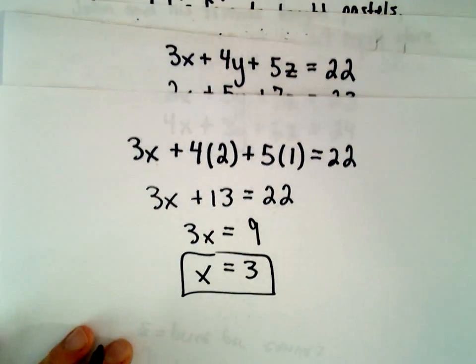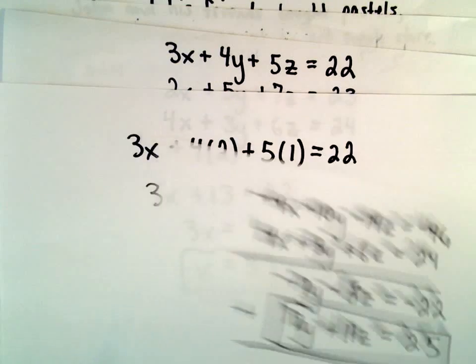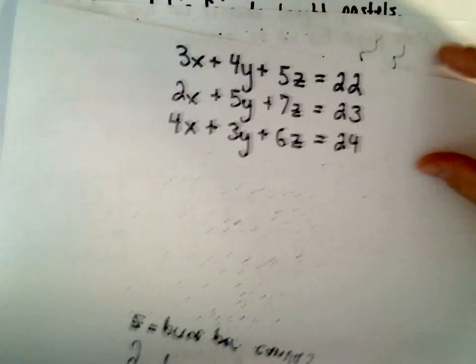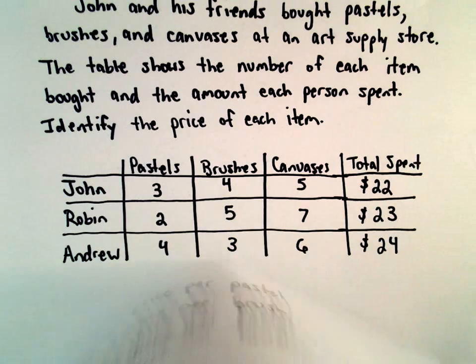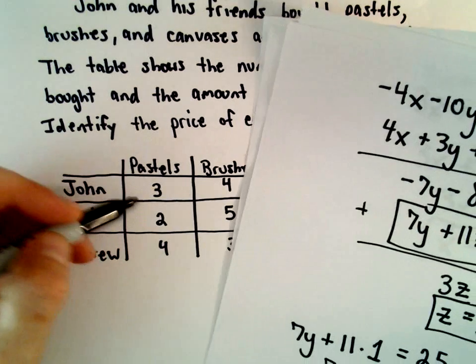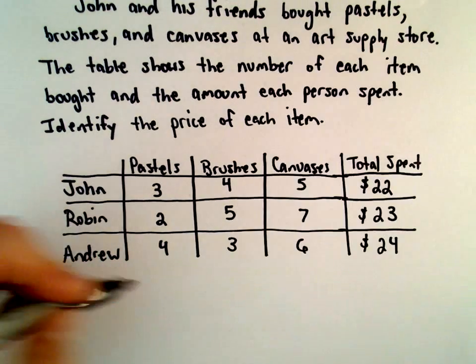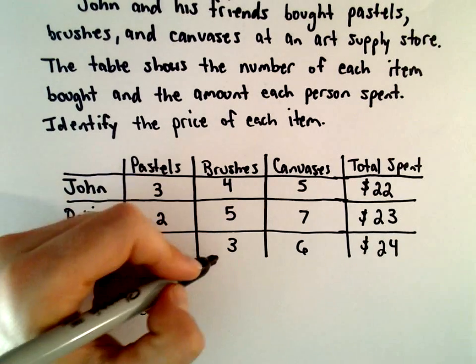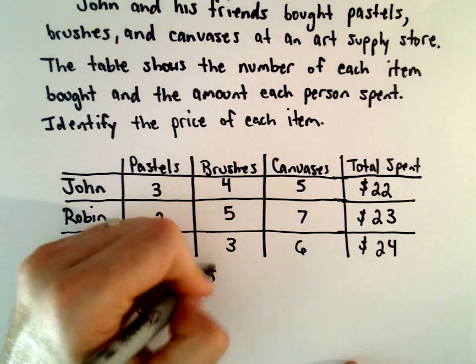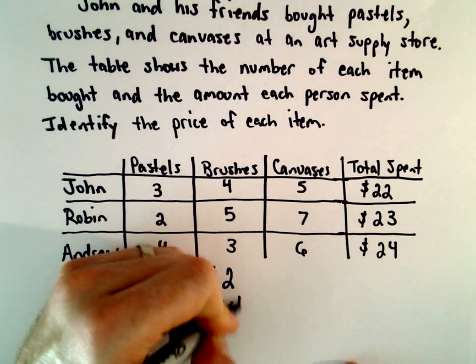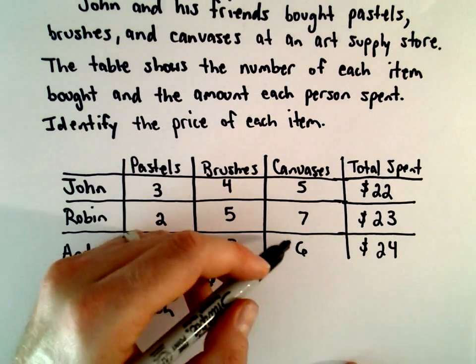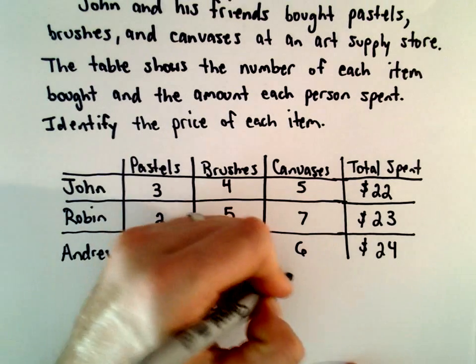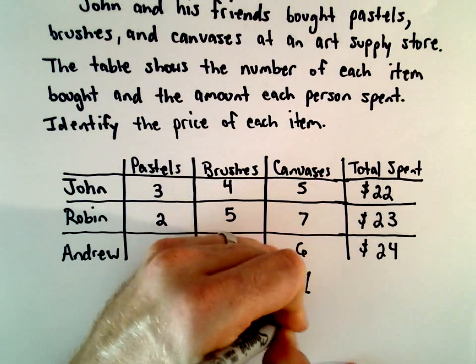The pastels, which were X, were $3 each. The brushes, which were represented by Y, will be $2 each. And then the canvases, which were represented by Z, those will be $1 each.